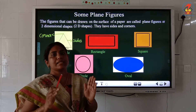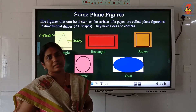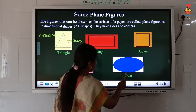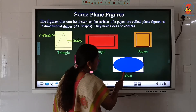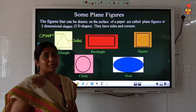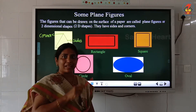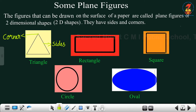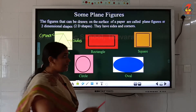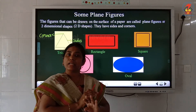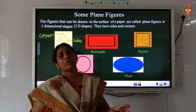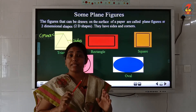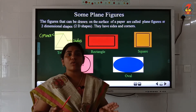The next shape is called an oval — spelling: O-V-A-L. An oval is similar to the shape of an egg. This shape also has no sides and no corners — zero sides and zero corners.